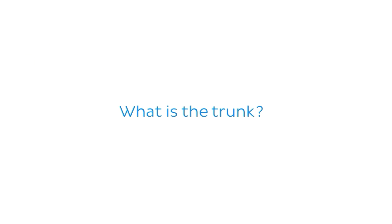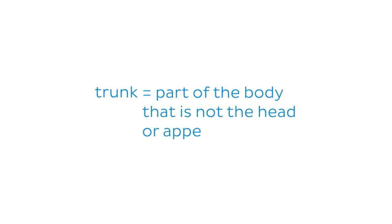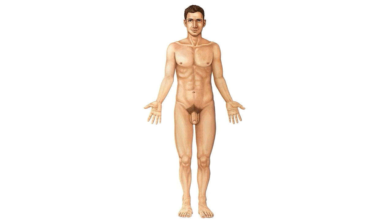The second question is: what is the trunk? The trunk is the part of the body that is not the head or the appendages. If you look at this image of our anatomical male in the center, you can see that the highlighted rectangle is the part of the body that doesn't include the arms, the legs, or the head — and that's the region we're going to be looking at today.